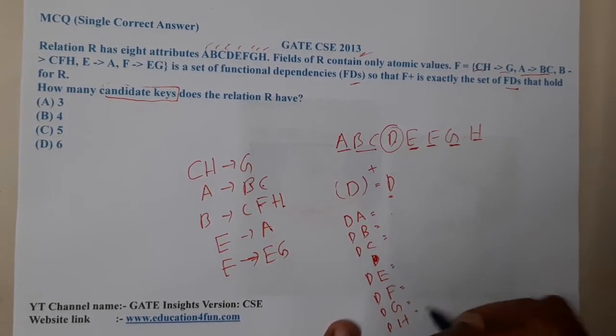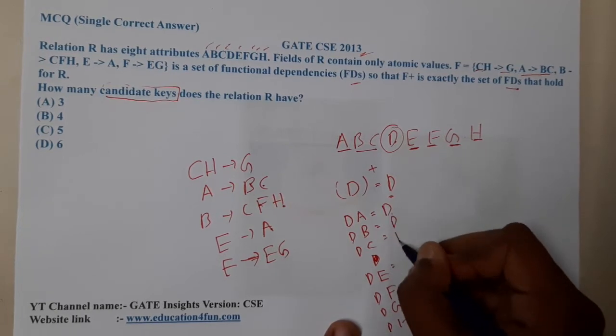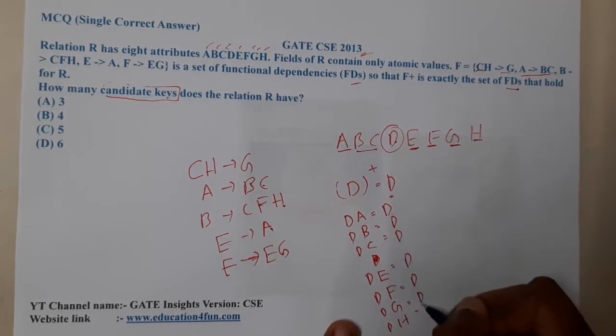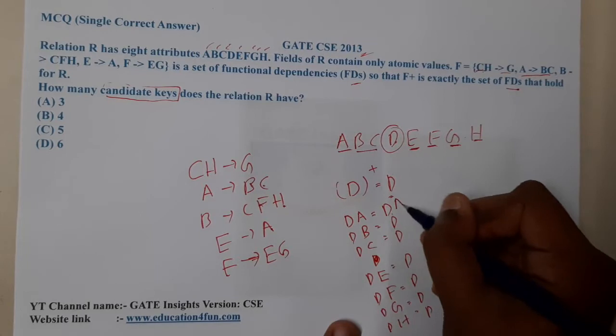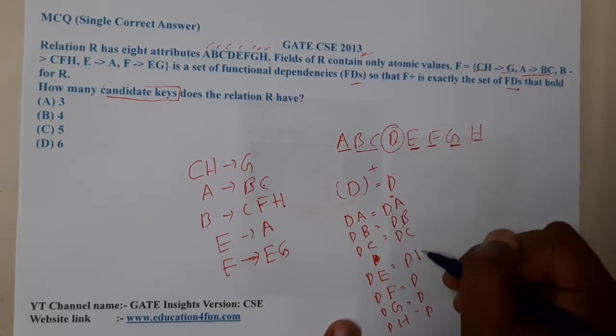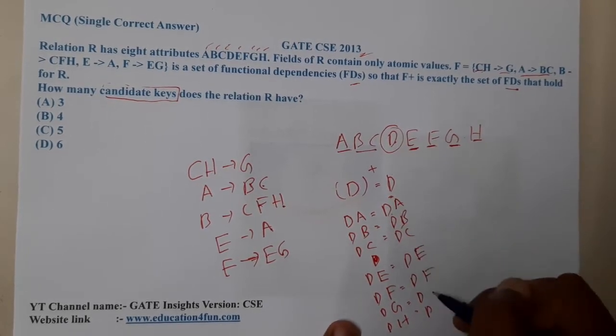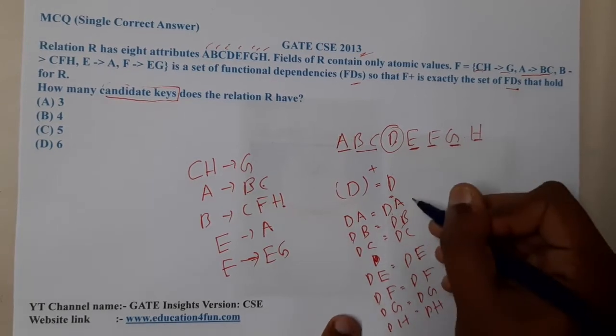Let me write it completely so that will be clear for us. From A, I can go to BC.